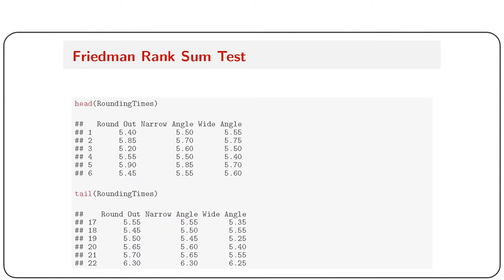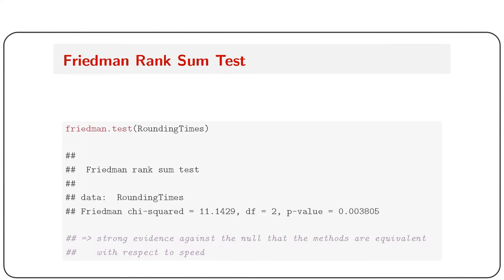The header and tail of the rounding time data frame are shown — 22 data points total. The Friedman test is applied using friedman.test(RoundingTimes) passing the data frame directly. The results give the Friedman chi-square test statistic, degrees of freedom, and p-value. The p-value is 0.003, providing strong evidence against the null hypothesis that the methods are equivalent with respect to speed.